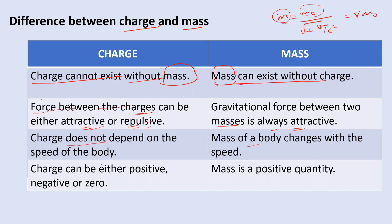If the speed v of a body is very much less than the speed of light c, then the relativistic mass m equals the rest mass m₀. But if v has a significant value, the denominator changes and m becomes greater than m₀ — meaning the mass of the body increases with speed. So by this formula, m = m₀ / √(1 − v²/c²), we confirm that mass changes with speed.